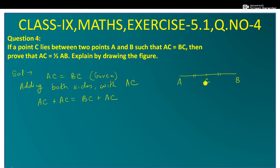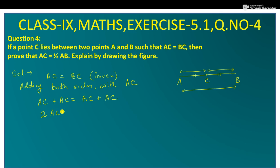BC plus AC यह क्या है? यह AB term है. देख सकते हैं B to C मतलब यहाँ से यहाँ तक, और AC यहाँ से यहाँ तक — पूरी line देखेंगे तो यह पूरा AB के बराबर होगा. तो लिख सकते हैं: AC plus AC is twice of AC, और BC plus AC इसको हम लिख सकते हैं AB.